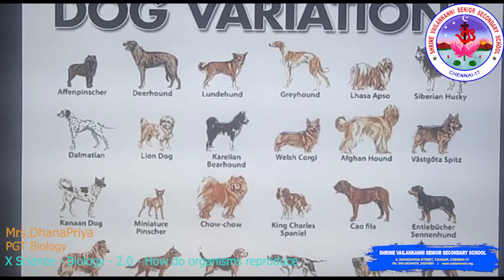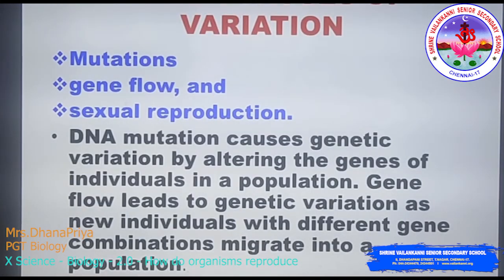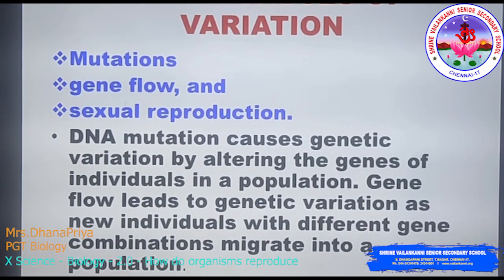Here is an example of dog variation — you can see many breeds and varieties of dogs. The major causes of variation are: first, mutation, which involves sudden changes acquired in DNA or genes; and second, gene flow and sexual reproduction. DNA mutation causes genetic variation by altering the genes of individuals in a population. Gene flow leads to genetic variation as new individuals with different gene combinations migrate into a population.